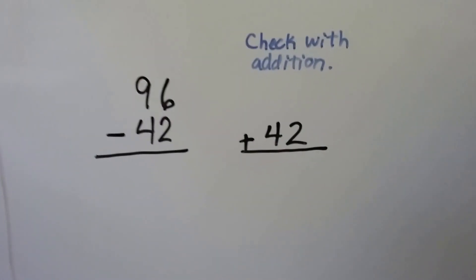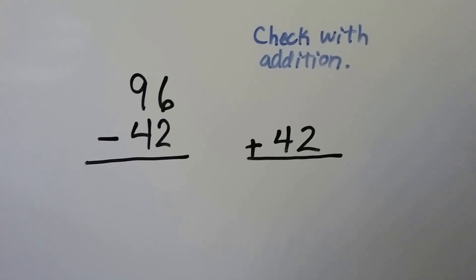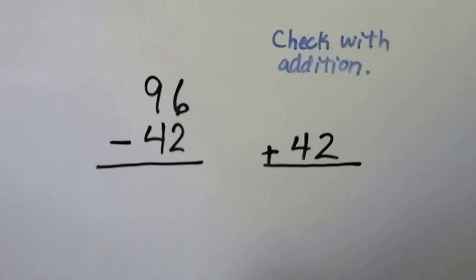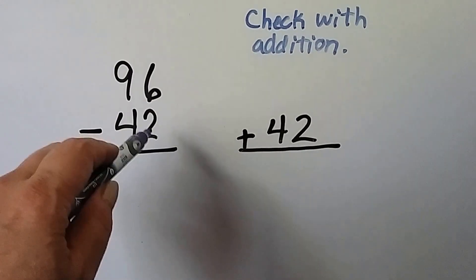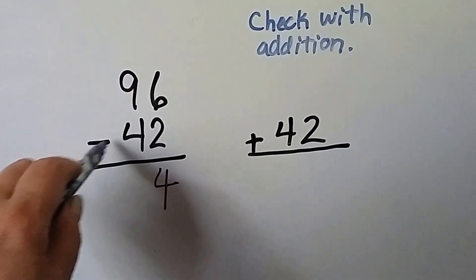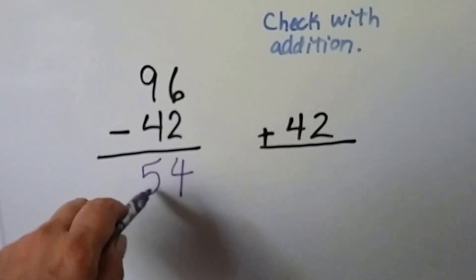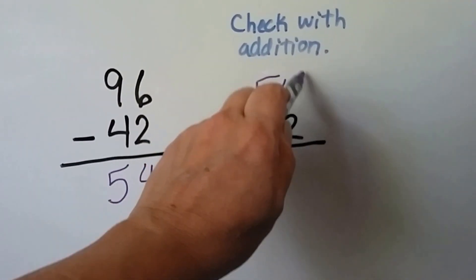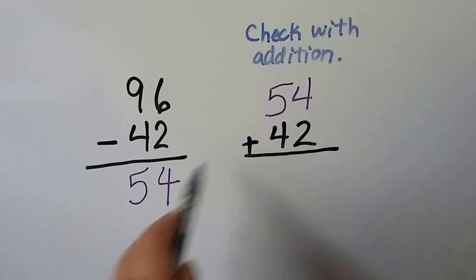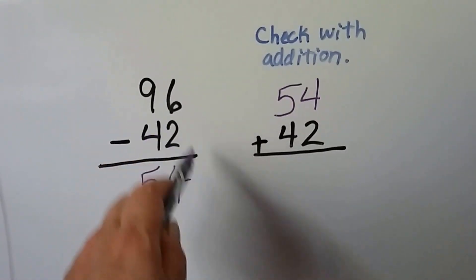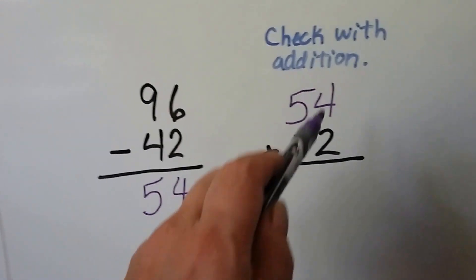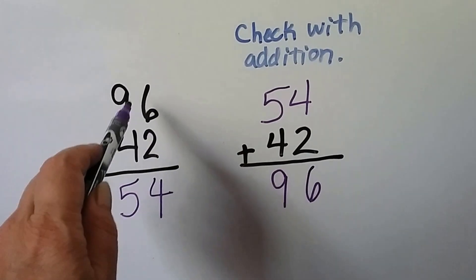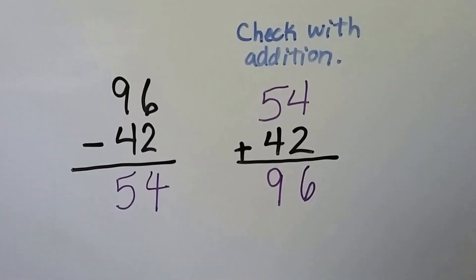Let's try it again. We have 96 minus 42. Do we need to regroup? We'll look at the ones place — this 2 is smaller than the 6, so no, we don't need to regroup. 6 minus 2 is 4, and 9 minus 4 is 5. Now we move our difference up here as an addend and add the difference to the subtrahend. 4 plus 2 is 6, and 5 plus 4 is 9. We got the same amount as our minuend, so we know we did it correctly.